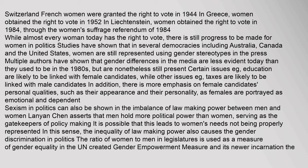While almost every woman today has the right to vote, there is still progress to be made for women in politics. Studies have shown that in several democracies, including Australia, Canada, and the United States, women are still represented using gender stereotypes in the press. Multiple authors have shown that gender differences in the media are less evident today than they were in the 1980s, but are nonetheless still present. Certain issues, such as education, are likely to be linked with female candidates, while other issues, such as taxes, are likely to be linked with male candidates. There is more emphasis on female candidates' personal qualities, such as their appearance and personality, as females are portrayed as emotional and dependent. Sexism in politics can also be shown in the imbalance of lawmaking power between men and women. Lanyan Chen asserts that men hold more political power than women, serving as the gatekeepers of policy making, which may lead to women's needs not being properly represented.